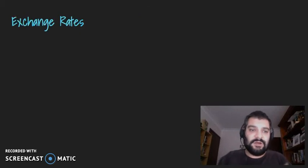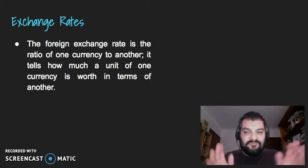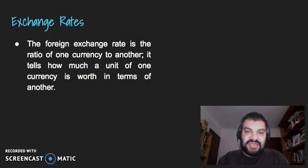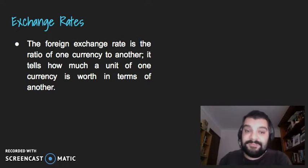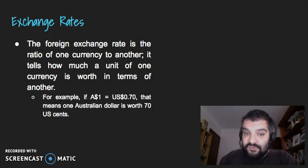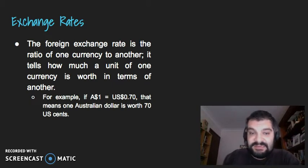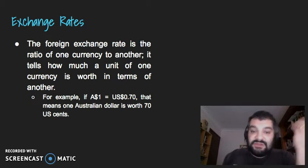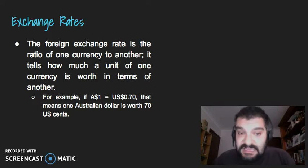So what are exchange rates? The foreign exchange rate is the ratio of one currency to another. It tells you how much a unit of one currency is worth in terms of another. For example, if one Australian Dollar equals 70 US cents, that means one Australian Dollar is worth 70 US cents.